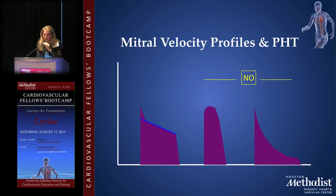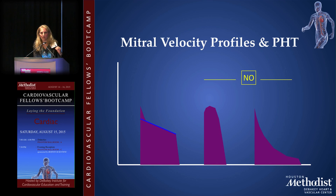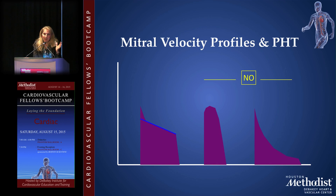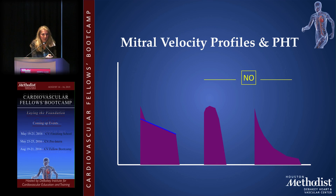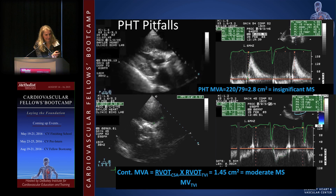Regarding mitral velocity profiles: the pressure half-time requires a constant decay slope — more than 50% of the time that slope must be constant. If the slope is continuously changing, the valve area will not correlate with the pressure decay, and therefore you cannot use the pressure half-time in that particular case to determine the true mitral valve area.